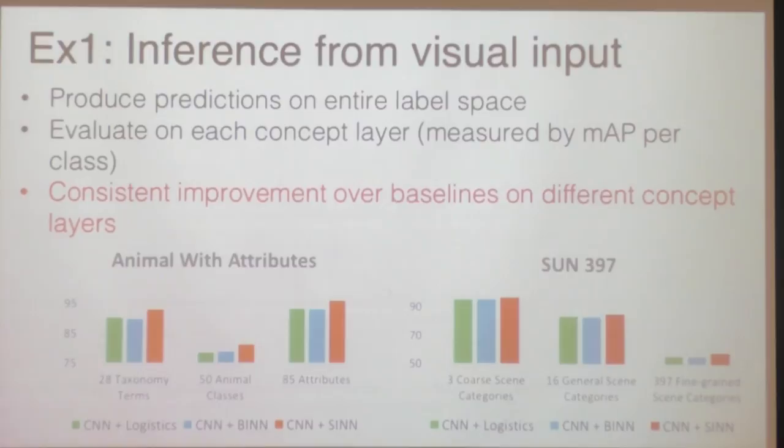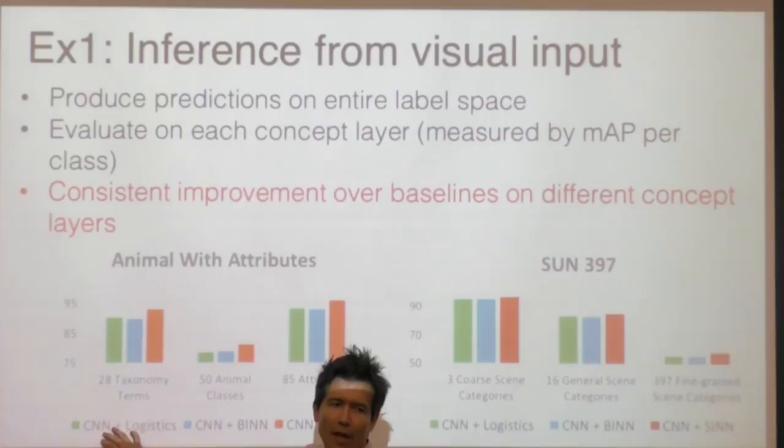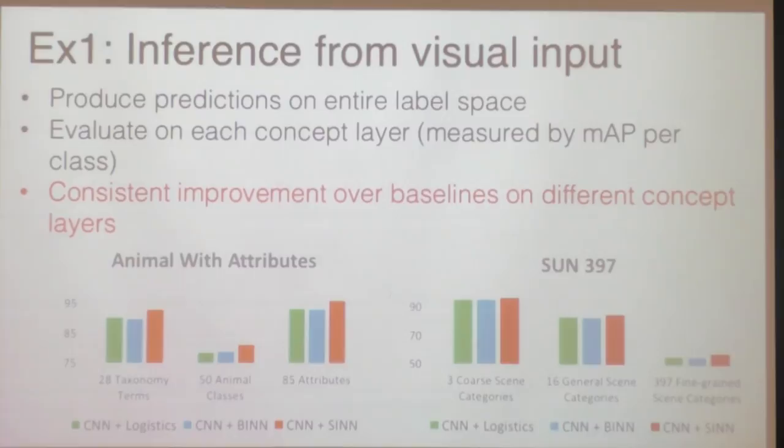We do ablation studies, taking out bits and pieces of the model, looking at mean APs over the different datasets. The baseline that matters most is doing a CNN with independent logistic regressors for each tag. Does this inference procedure matter? Can't you just train a CNN and have it predict each tag independently? This model does outperform that. The red bars represent the combined model; we're getting a boost in MAP across all datasets by modeling the interaction terms the way we do.